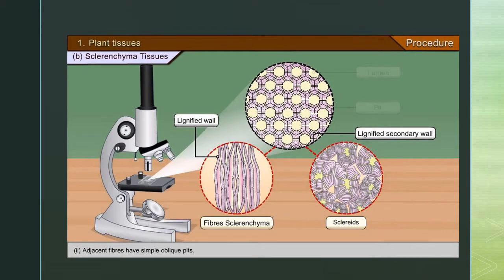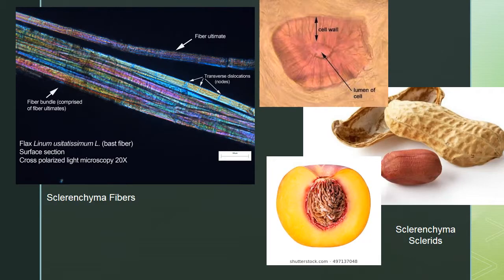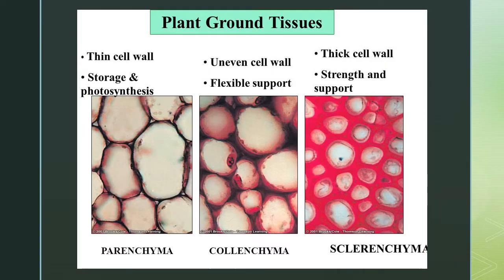Under the microscope, sclerenchyma appear as either fibers or sclerids. Sclerenchyma fibers are found in flax and are used to make linen clothing. Sclerids are present in peanut shells and the pits of peaches — making them very hard. That's a summary of the three cell types that make up plant ground tissue.